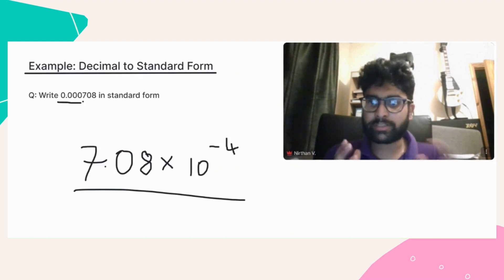Now take care here not to include any zeros after the first non-zero digit, like the zero between the 7 and the 8, for instance, because that will lead to an incorrect answer.